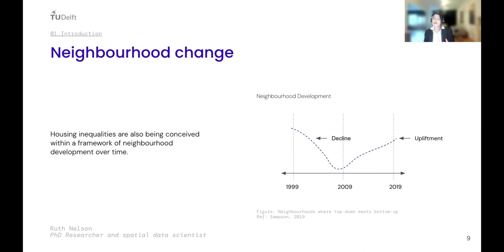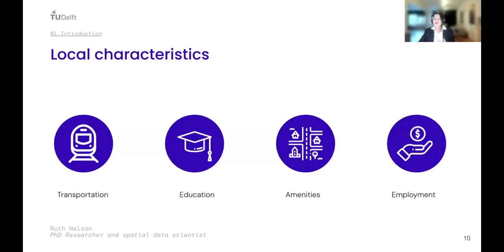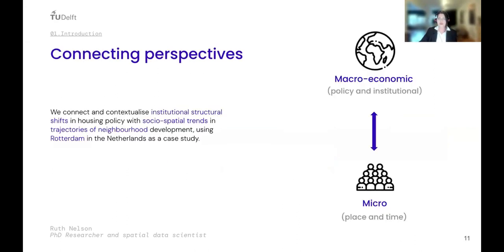Alternatively, housing inequalities are also conceived within a framework of neighborhood development over time — looking at how neighborhoods change and develop and how this affects housing inequalities. Researchers from this perspective tend to focus on more local characteristics such as access to transportation, educational facilities, local amenities, access to employment opportunities, and how these contribute to housing inequalities over time.